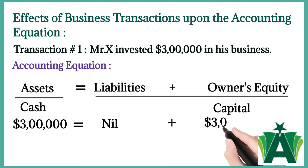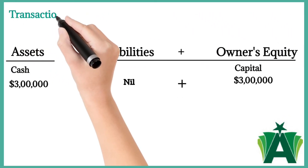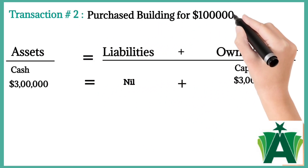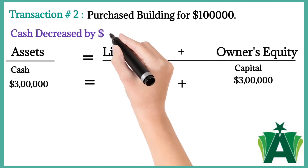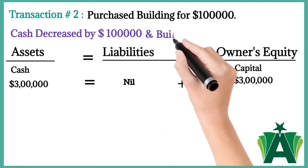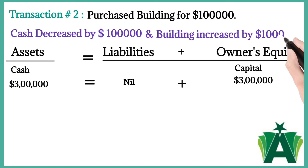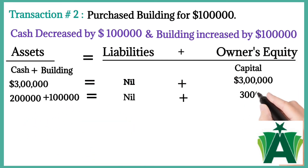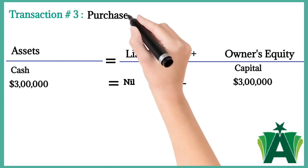Owner's equity also increased by $300,000. Transaction number two: purchased a building for $100,000. This transaction brought two changes — cash decreased by $100,000 and building increased by $100,000.